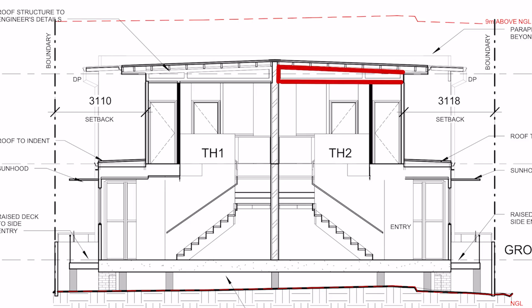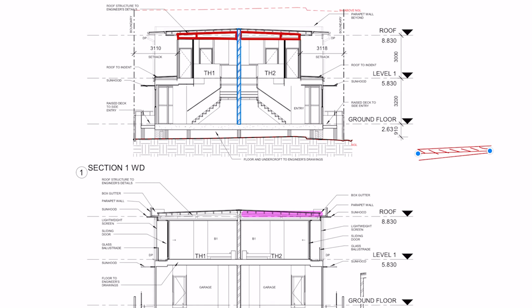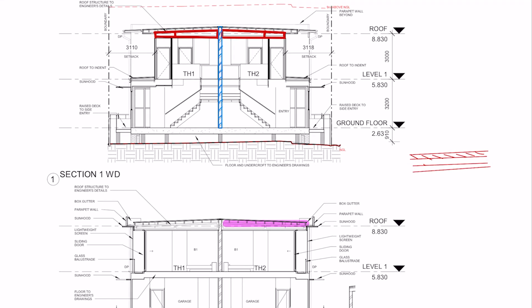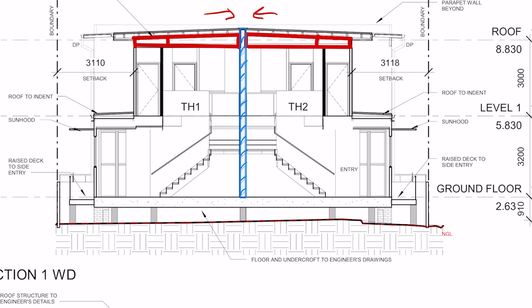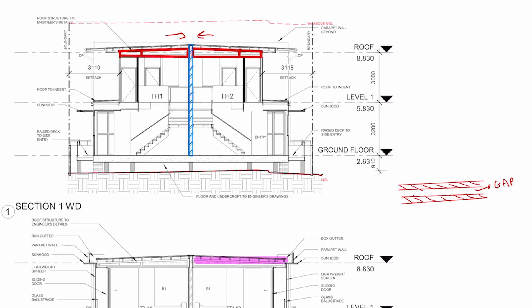Looking at this section, notice that the trusses stop at the party wall and a second truss starts from there. Every element on one dwelling has to be separate from the other dwelling for fire protection — if one side goes up in flames, the other side will be protected. Speaking of party walls, this one is a concrete block wall that separates both units. A cheaper option would be a timber cavity wall — basically two timber walls with a gap in between. The reason I prefer the block wall is that it helps a lot with bracing the structure, because the block wall can transfer loads from one side to another, whereas the timber cavity wall has a gap so you can't transfer wind loads.